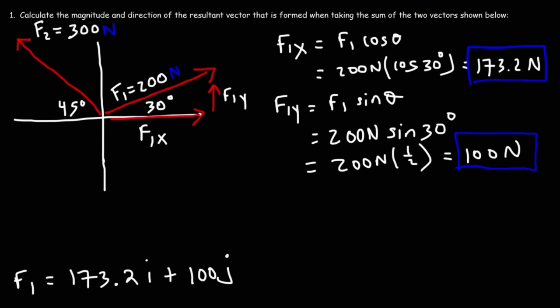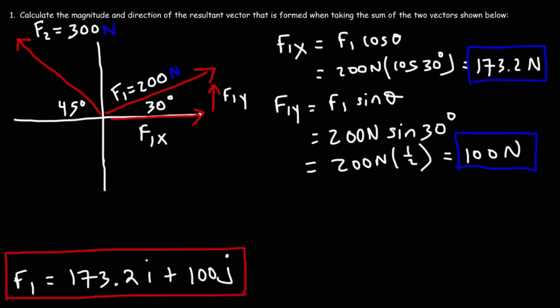We can write F1 in component form: 173.2i plus 100j. You might be wondering what i and j are — they are unit vectors. Think of the word uni, meaning 1. A unit vector is simply a vector with a magnitude of 1. i is the unit vector along the x-axis; j is the unit vector along the y-axis. So 173.2 represents the x component of F1, and 100 represents the y component of F1.